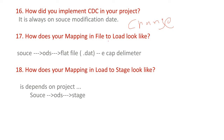How does your file-to-load mapping look like? First we have the source table, then the ODS layer, which contains only the latest 10 days of data. We then use a flat file with a delimiter to load data into the staging area.